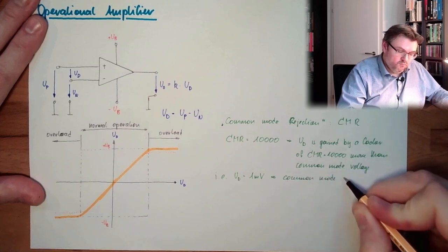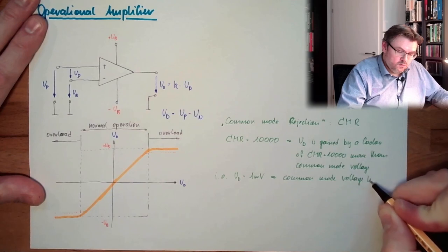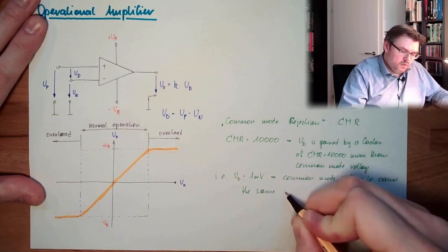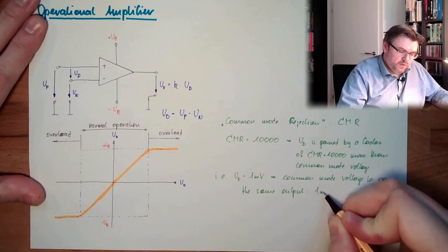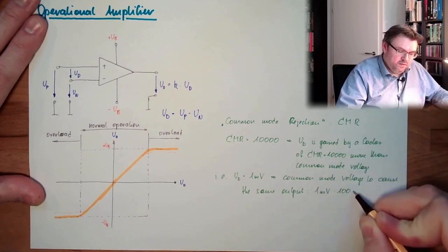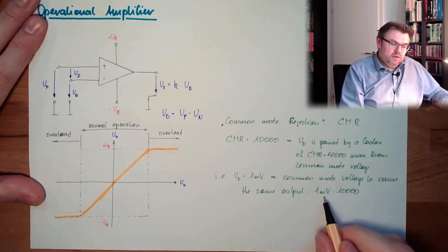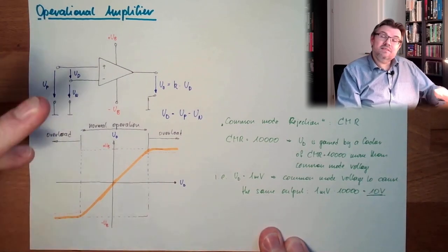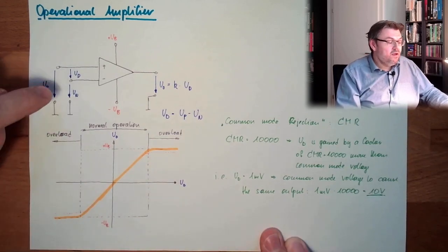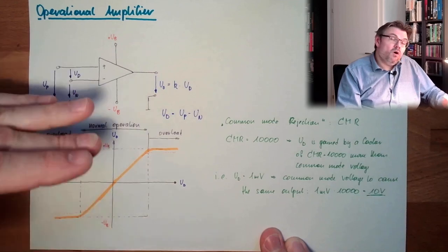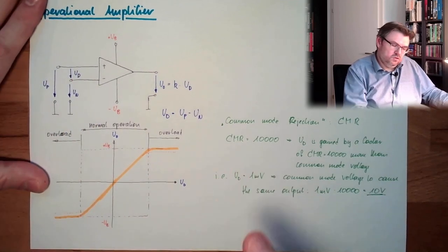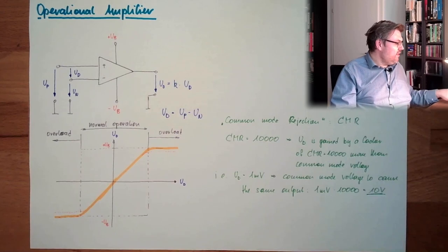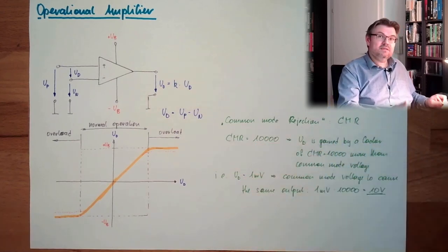So we have to say, the same output, 1 millivolt multiplied by 10,000. 1,000 and 1 millivolt is away, so it's 10 volts. If UP and UN is 10 volts, and we would have a common mode rejection of 10,000, then they would cause the same output as 1 millivolt differential voltage would cause. This means CMR 10,000.